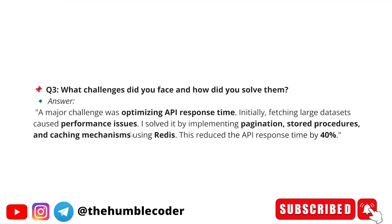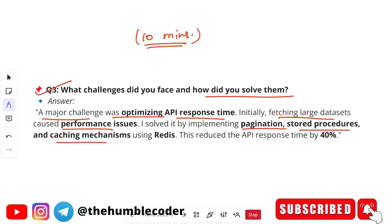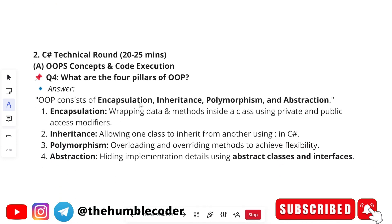Moving on to the next question: what challenges did you face and how did you solve them? Remember, all these project-based questions were asked within those 10 minutes. One such answer can be: 'A major challenge was optimizing API response time. Initially, fetching large data sets caused performance issues. I solved it by implementing pagination, stored procedures, and caching mechanisms using Redis. This reduced the API response time by 40%.'